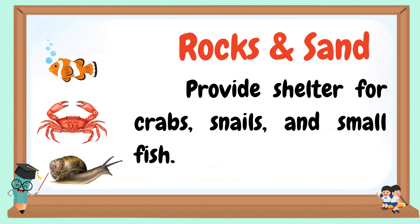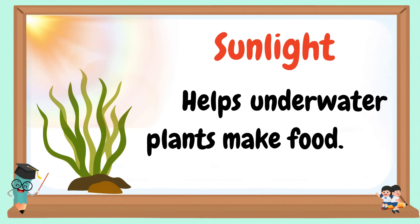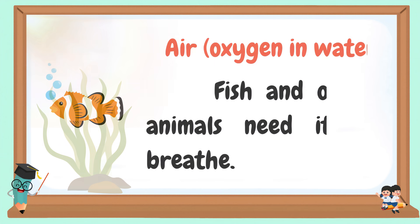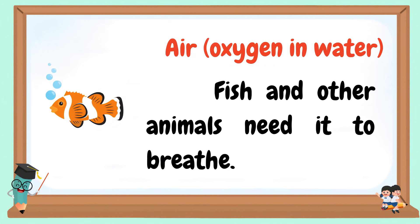Rocks and sand provide shelter for crabs, snails, and small fish. Sunlight helps underwater plants make food. Air — oxygen in water — is needed by fish and other animals to breathe.